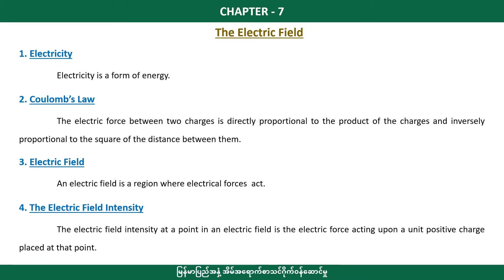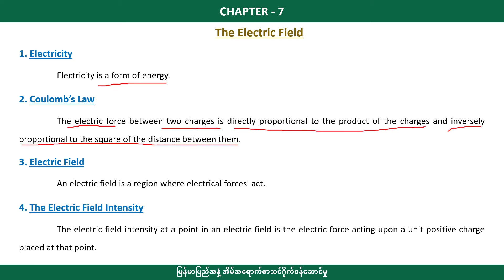This is the general account. Number one: definition of electricity. Electricity is a form of energy. The electricity definition involves Coulomb's Law. The electric force is between two charges. Charges are directly proportional to the product of charges and inversely proportional to the square of the distance between them.